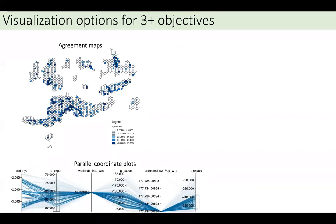For the results shown in agreement maps where color indicates always-chosen solutions versus never-chosen solutions — how does this relate back to your Pareto optimal trade-off curve? Wouldn't those never-chosen sites be dominated, i.e., not Pareto optimal? And what optimization solver did you use — is it available in Python?